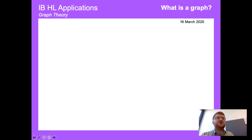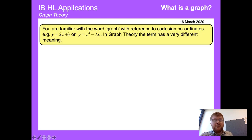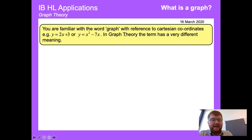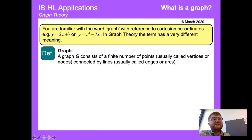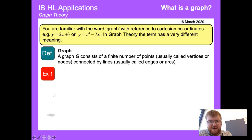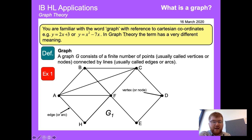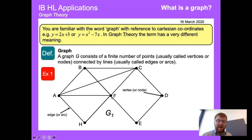You're probably familiar with the word 'graph' in reference to Cartesian coordinates working in x and y — quadratic or linear graphs — but in graph theory the term has a very different meaning. A graph in the graph theory sense is essentially points, i.e. nodes, connected by lines which are known as edges or arcs. In this example, B, F, and D are nodes, whereas lines from F to E or F to H are called edges or arcs.